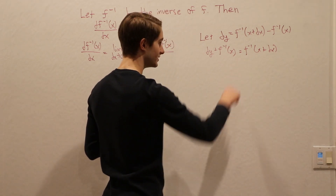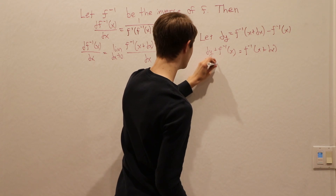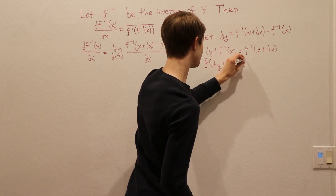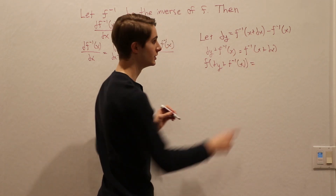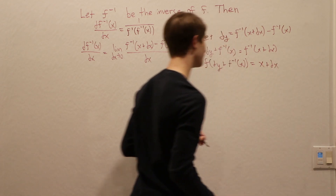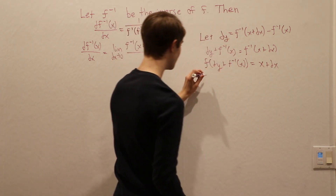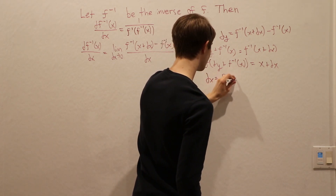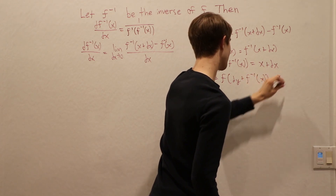From here we can take f on both sides. On the left side we get f of dy plus f inverse of x. If we apply f to the inverse function, we just get the original argument back, so we get x plus dx on the right. Then subtracting x from both sides gives us dx equals f of dy plus f inverse of x, minus x.